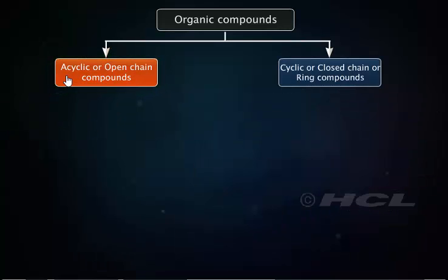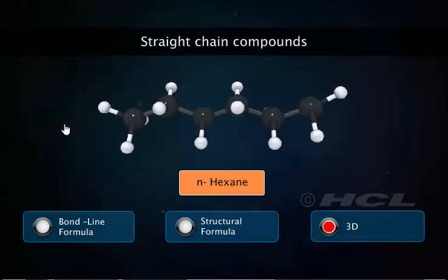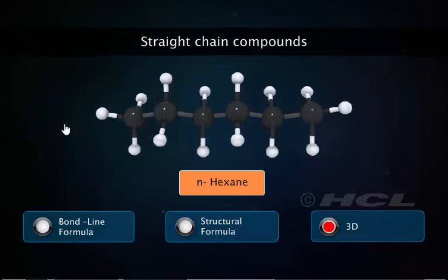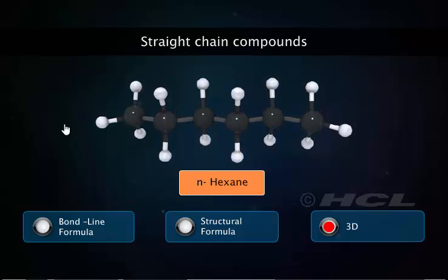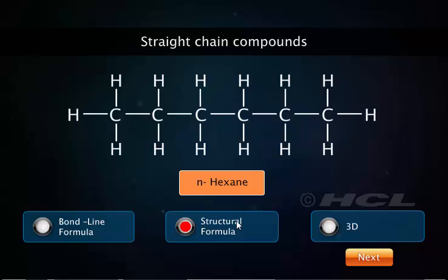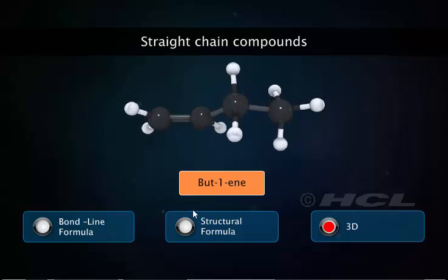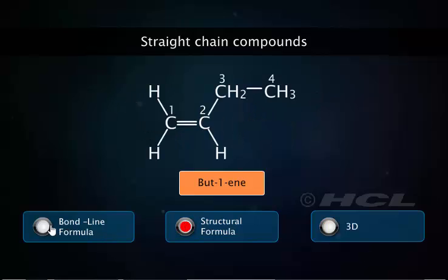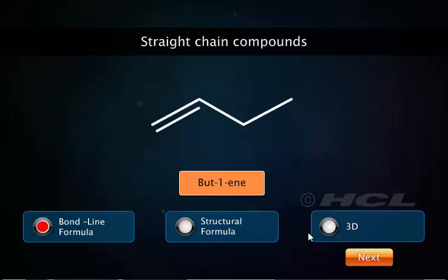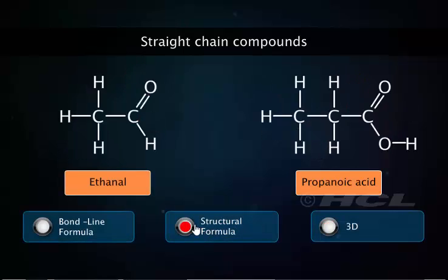Open-chain compounds are also called acyclic compounds. In these compounds, the carbon chains are either straight or branched. In a straight chain compound, one carbon atom is attached to no more than two other carbon atoms. As its name implies, the straight chain is a straight link of carbon atoms and may involve double and triple bonds too. Apart from carbon, other atoms such as oxygen or nitrogen may be present.